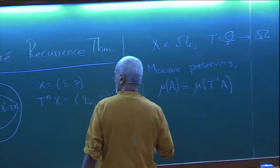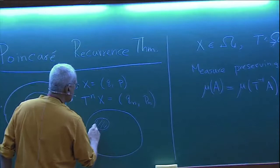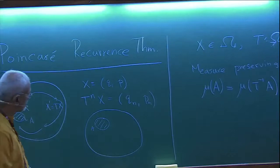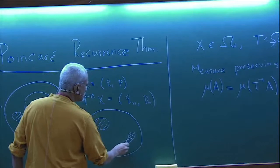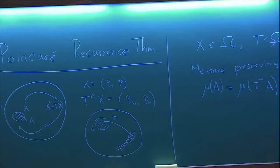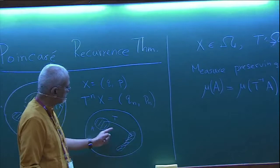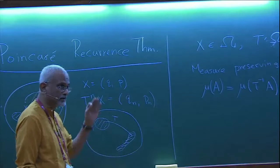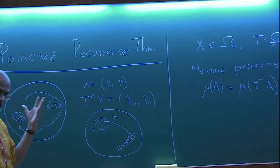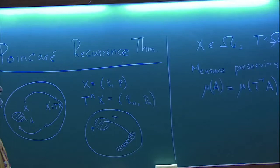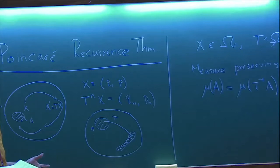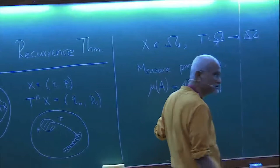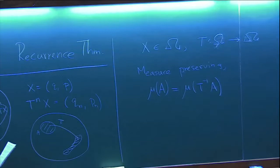The map T is said to be measure-preserving if the volume of A equals the volume of T(A) — it preserves the measure as A is transformed under T. Each point gets mapped to some other point, and the subset gets distorted, but its volume is preserved. As we saw, the area-preserving maps we were writing satisfy this condition. In general, Hamiltonian systems are of this kind because there is a natural measure in phase space that is preserved — that's simply the volume of phase space. That's Liouville's theorem.